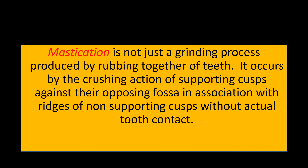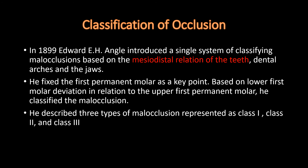Mastication is not just the grinding process produced by rubbing together of teeth. It occurs by the crushing action of the supporting cusps against their opposing fossa in association with the ridges of non-supporting cusps, without actual tooth contact. In 1899, Edward Angle introduced a classification of malocclusions based on the mesiodistal relationship of teeth, dental arches and the jaws, fixing the first permanent molar as the key point. Based on the lower first molar deviation in relation to the upper first permanent molar, he classified malocclusions as Class 1, Class 2 and Class 3.